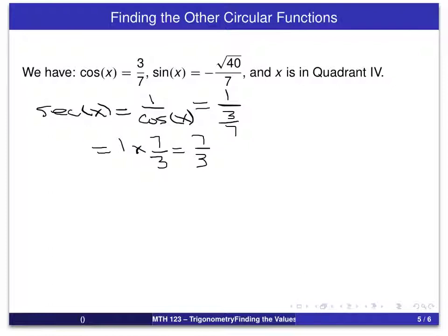We do the same thing for cosecant of x, which is 1 over the sine of x, which is 1 over minus the square root of 40 over 7. So we're going to do this a little more rapidly. We basically, again, invert and multiply and we get minus 7 over the square root of 40 for cosecant of x.